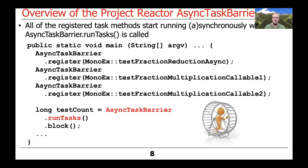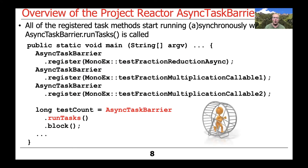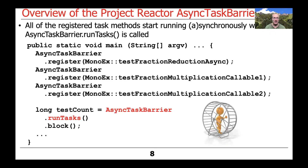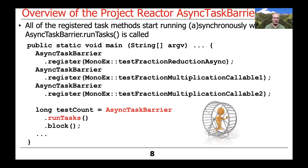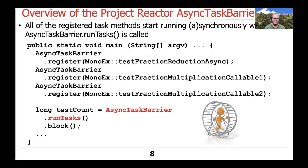All of the registered task methods will start running asynchronously — or synchronously if used that way — when the AsyncTaskBarrier.runTasks method is called. After registering all these asynchronous computations, we call AsyncTaskBarrier.runTasks, which goes ahead and starts up all the computations to run in the background.